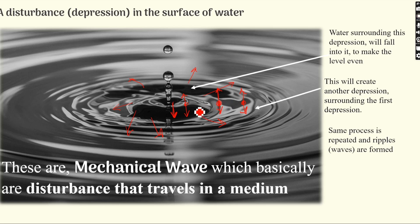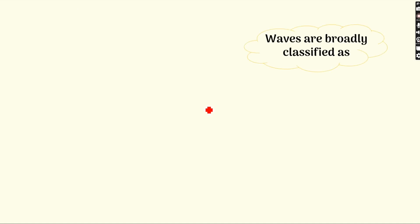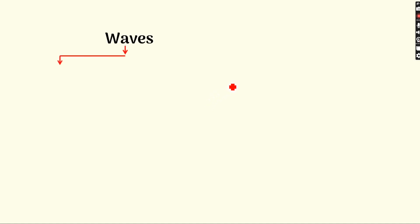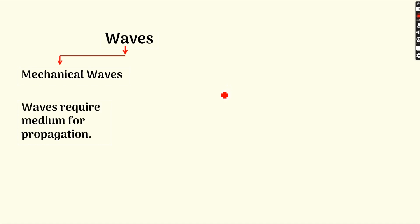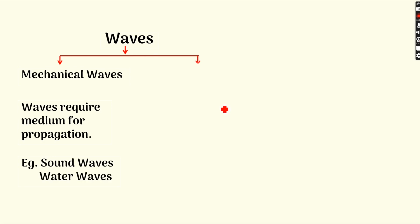This propagation of energy without the propagation of the particle is called a wave. Since there is a material medium involved and it is oscillating as it transfers energy to the next particle, this kind of wave is called a mechanical wave. Mechanical waves require a material medium for their propagation. Another example of a mechanical wave is a sound wave, which also requires some kind of material medium.